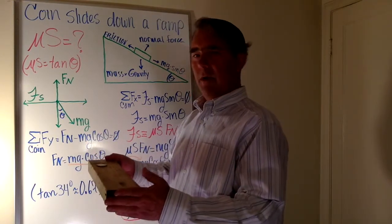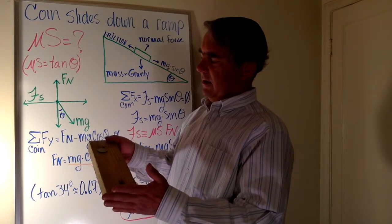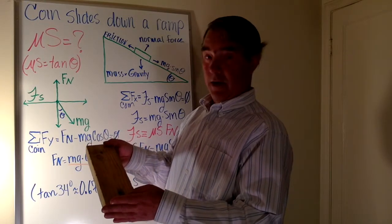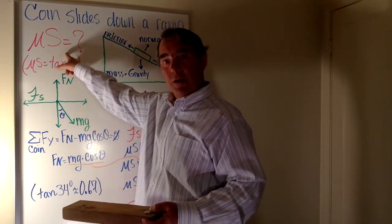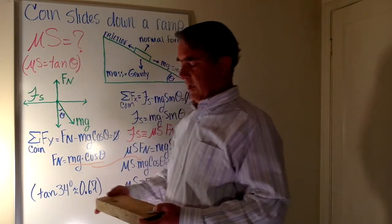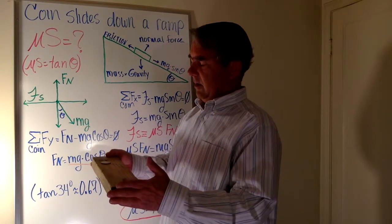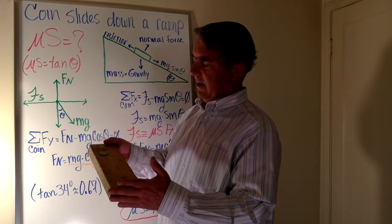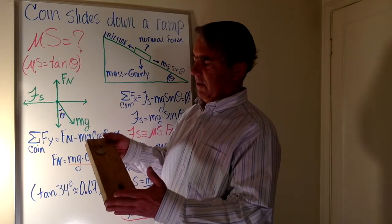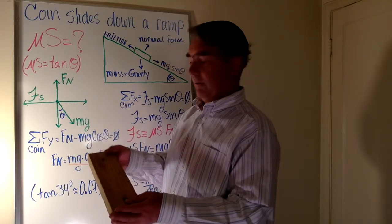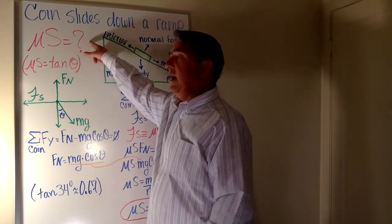The problem is a coin sitting on a ramp, and the ramp is slowly elevated until the coin starts to slide down the ramp. The question is: what's the coefficient of static friction? The ramp is slowly elevated and the angle increases until the coin starts to slide.